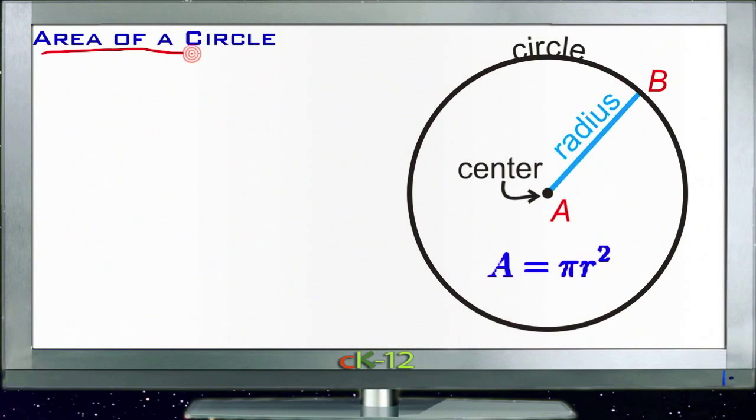Calculating the area of a circle is actually quite a bit easier than you might think, just like the circumference. That was really just a simple calculation—just pi times the diameter. Calculating the area of a circle is just pi times the radius squared.